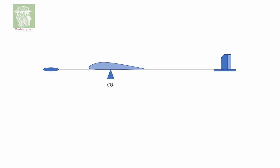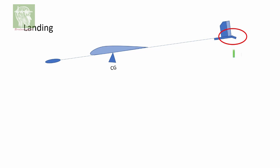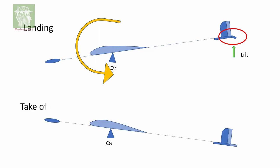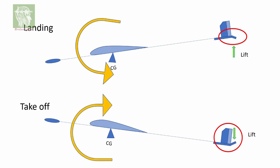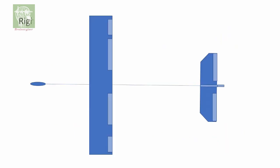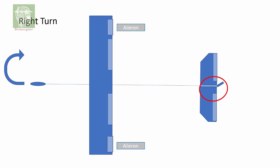Generally, the center of gravity, or CG, of the plane is below the wing. During landing, the elevator goes down, therefore lift increases on the tail and as a result the nose goes down. During takeoff the opposite happens — the elevator goes up and as a result the nose goes up. To take a right turn, the rudder moves right and the plane takes a right turn. For smoother turning, people also use the ailerons.